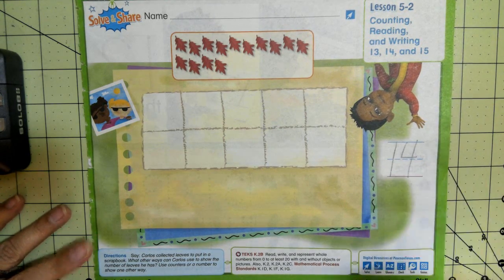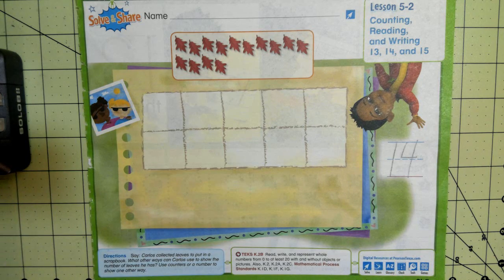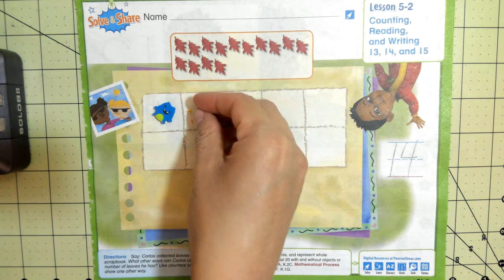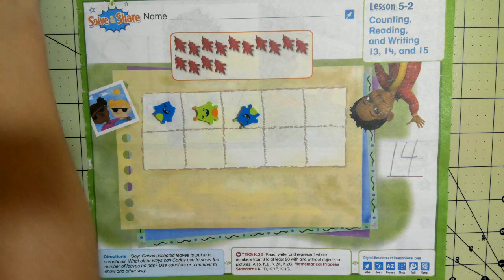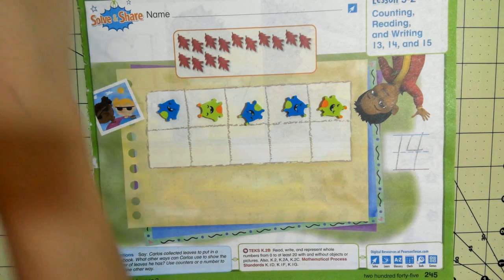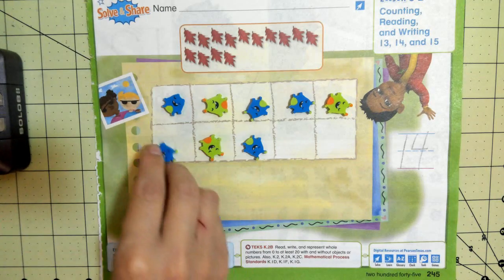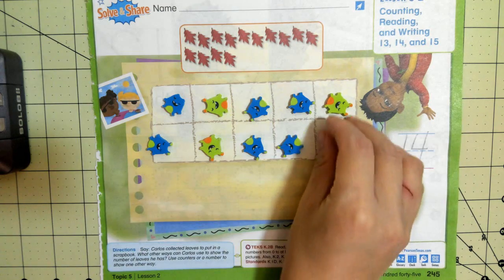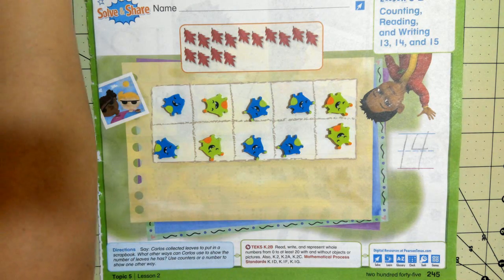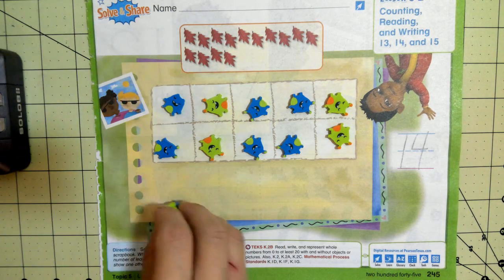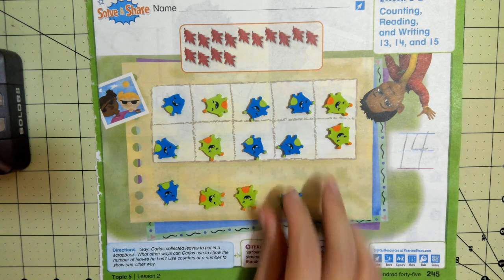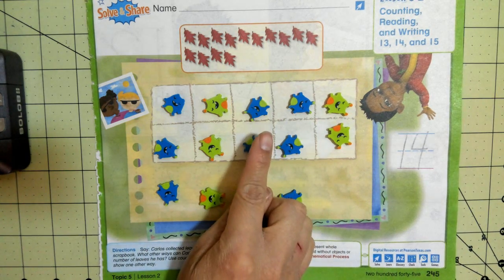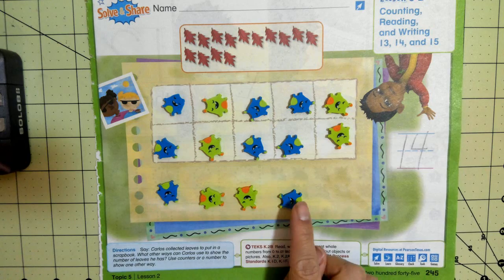Okay, so let's put 14 counters on our 10 frame. 1, 2, 3, 4, 5, 6, 7, 8, 9, 10 fit on the 10 frame. Okay, so 10, 11, 12, 13, 14. So 10 and 4 make 14. That's one way we can show 14.